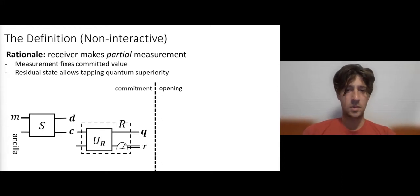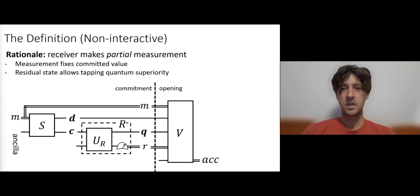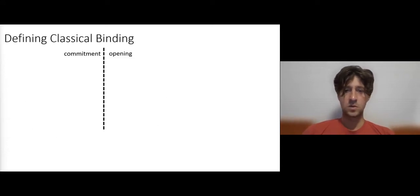Now, let us talk about the opening phase. Here we have a verifier, which is a quantum algorithm, that takes the message M, the decommitment state, and the quantum receiver state Q, as well as the classical measurement R. And if everything was done honestly, then the verifier is going to accept. So this is the syntax.